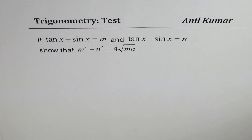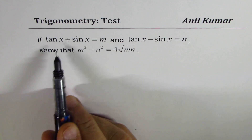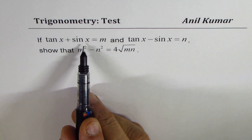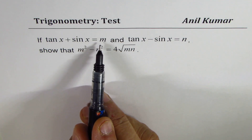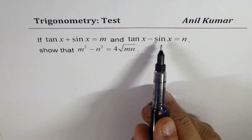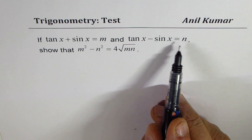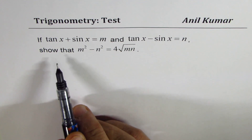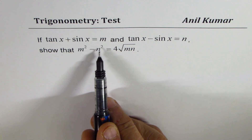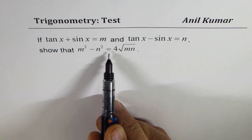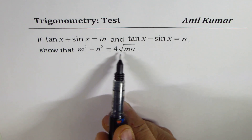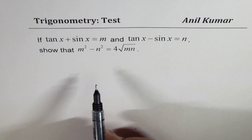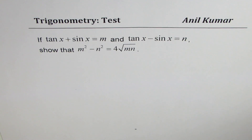I'm Anil Kumar sharing with you a test question on trigonometry. The question is: if tan x plus sin x equals m and tan x minus sin x equals n, show that m squared minus n squared equals 4 times the square root of mn.